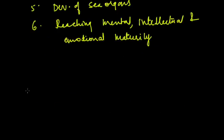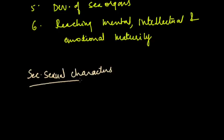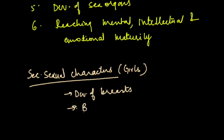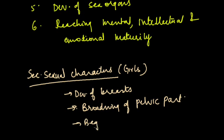There are some secondary sexual characters which develop in girls and boys. Especially in case of girls: development of breast, broadening of pelvic portion, and beginning of the menstrual cycle.